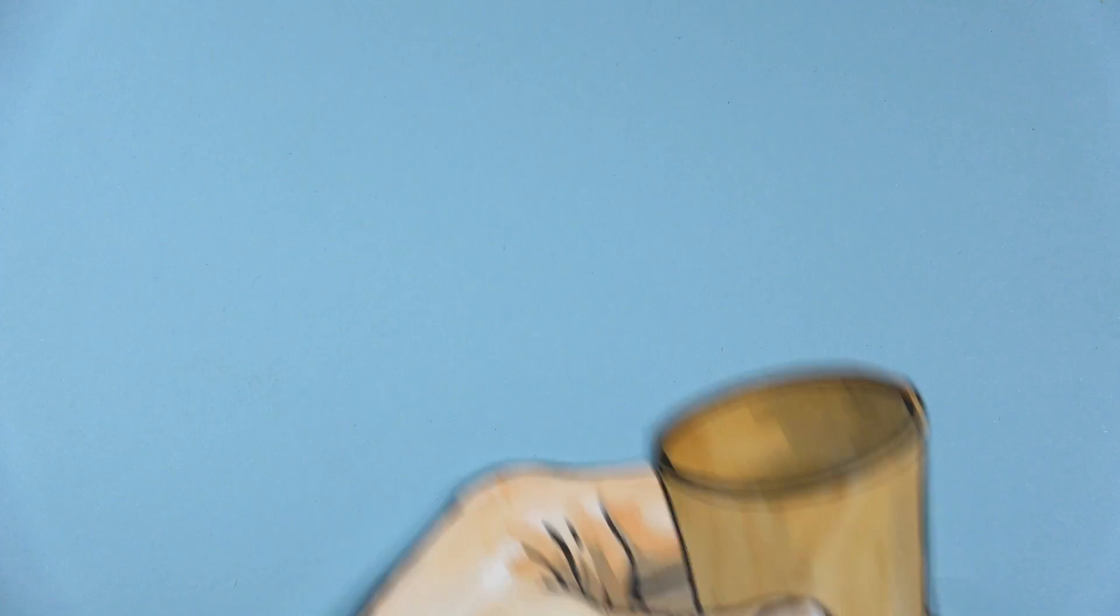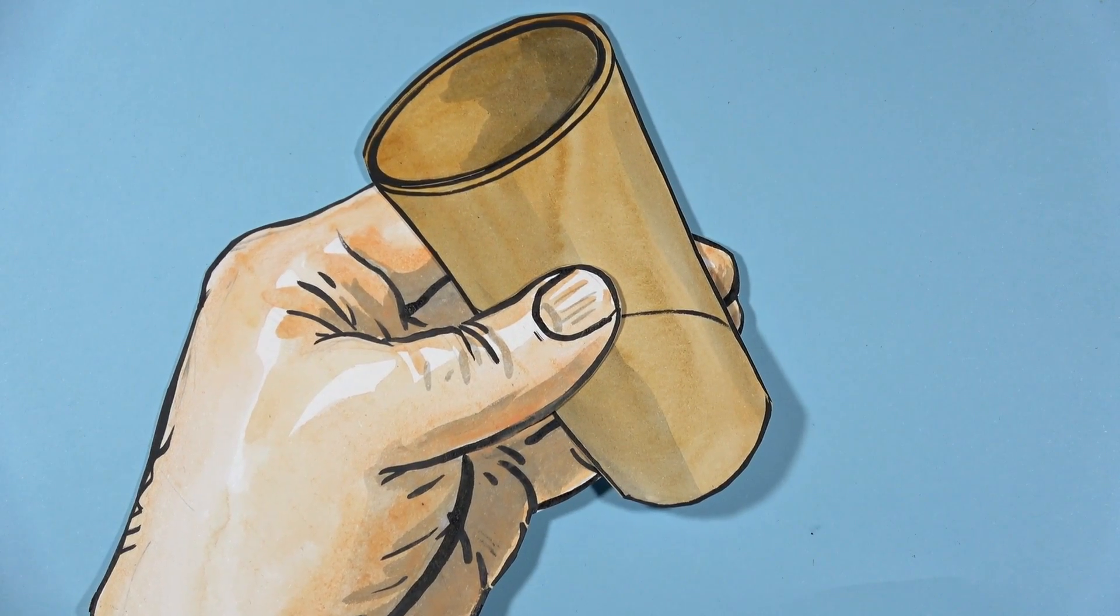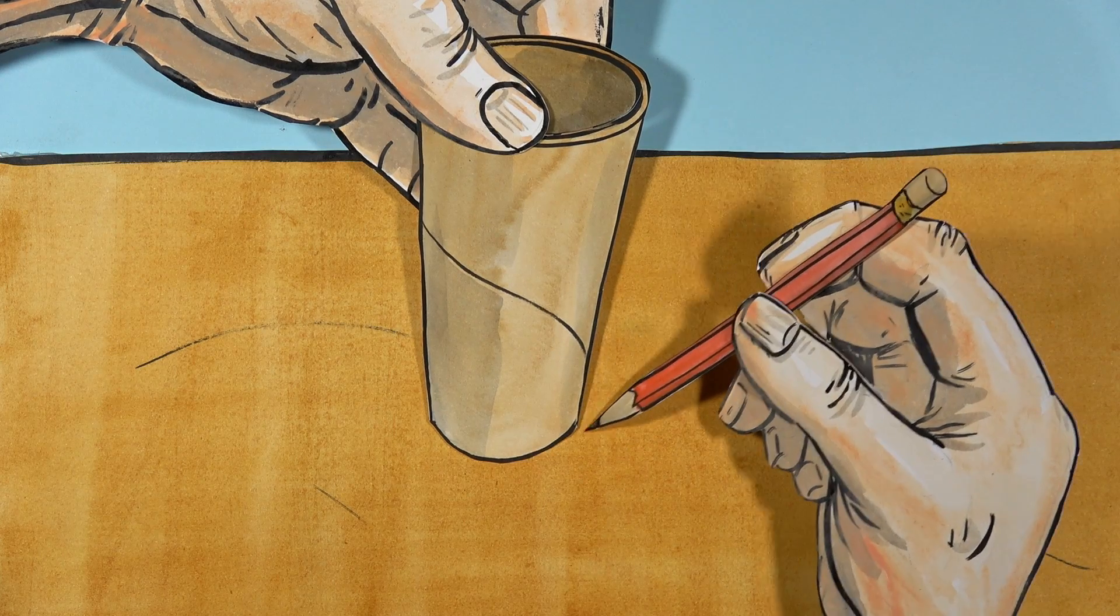You will need a cardboard box and the tube from the toilet paper. Trace the hole with a sharp pencil.